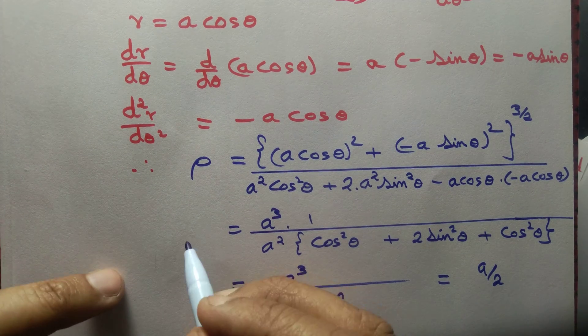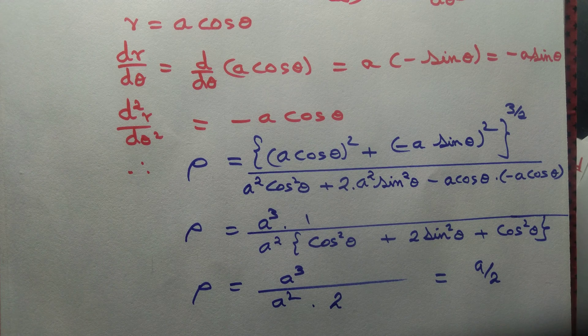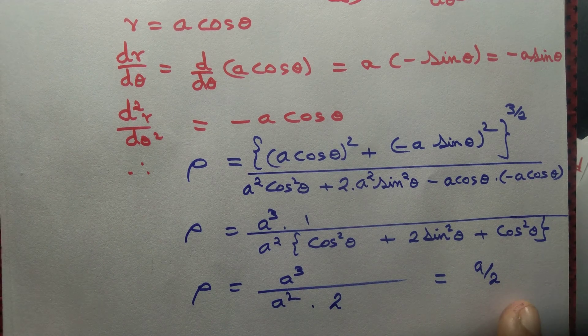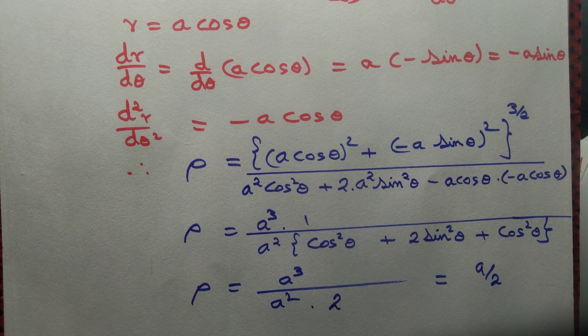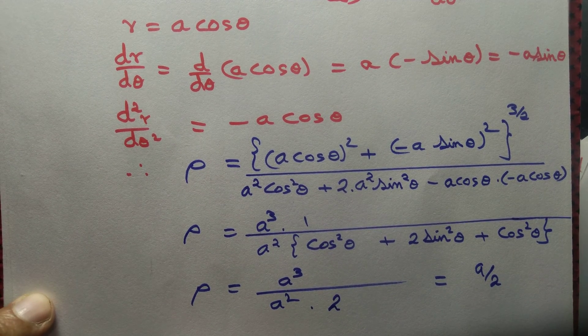Oh! Radius of curvature is constant. Can you guess that curve? That curve must have been a circle. So we have computed radius of curvature equal to constant, and we guess that curve must have been a circle. Is that true? Let's see.